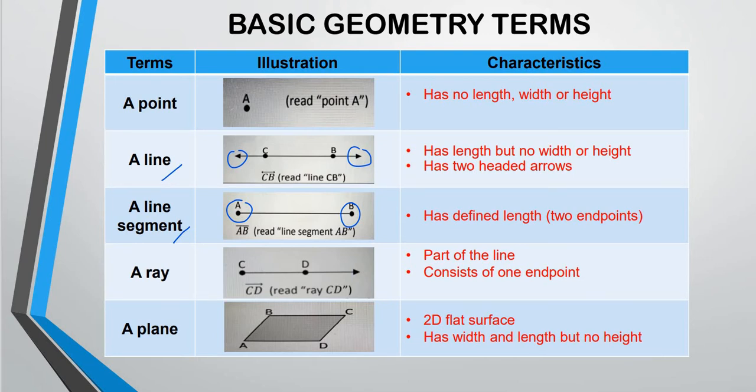And how about a ray? Basically a ray we have consists of one endpoint, part of the line. Here. And you want one arrow. CD. Read ray CD. So CD is actually a part of a line, right? So that is what we call a ray.